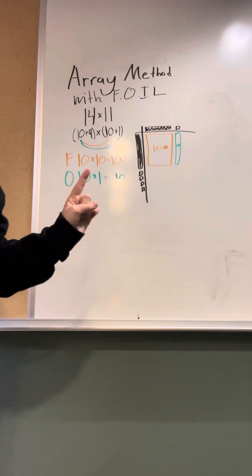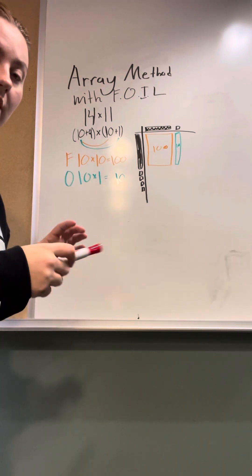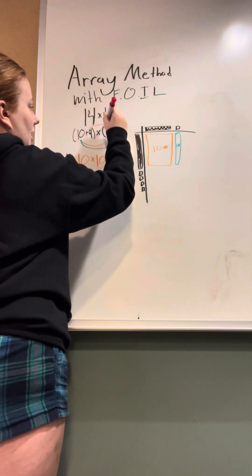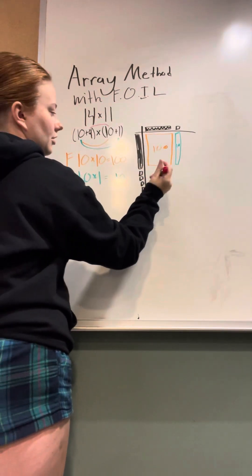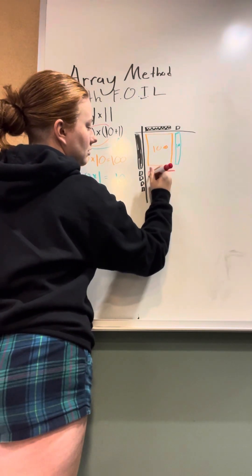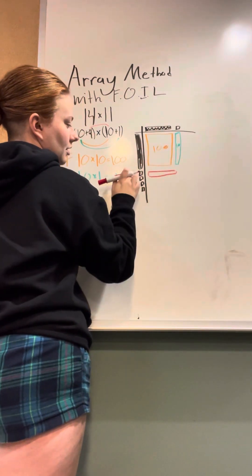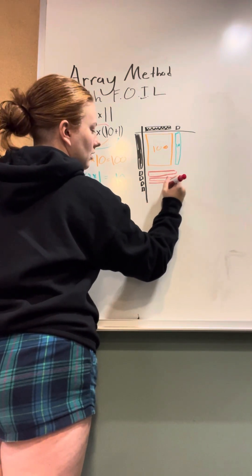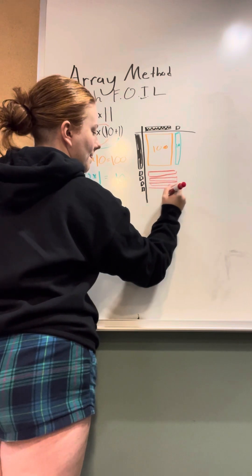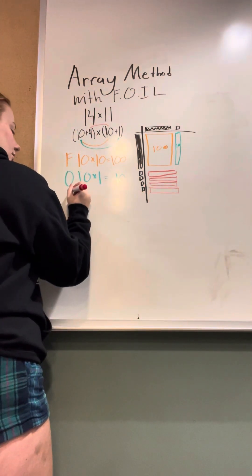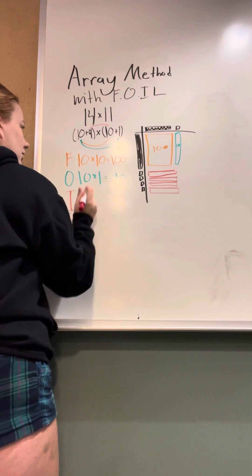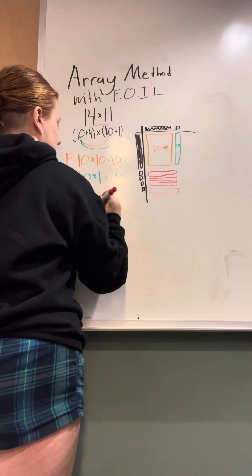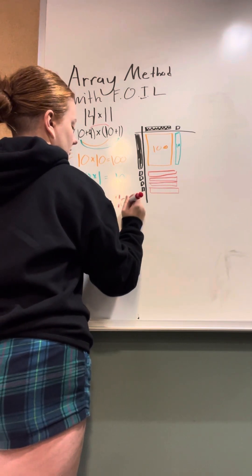And then for I, or inner, we're going to switch colors again. And we are going to do our 4 and our 10, which over here is going to be this long up here times these 4 down here. So we're going to do 4 longs. And then back over here, I for inner. So it's going to be 10 times 4, which equals 40.